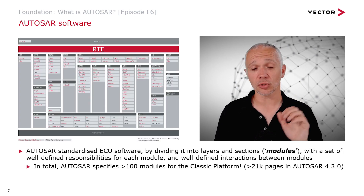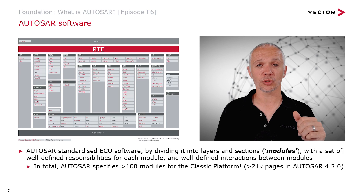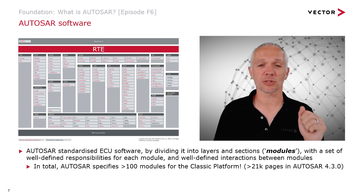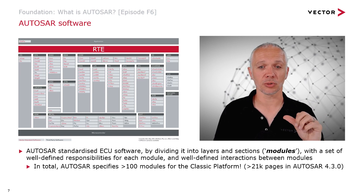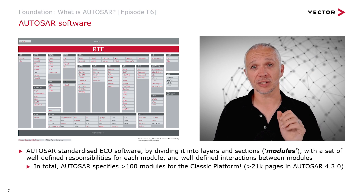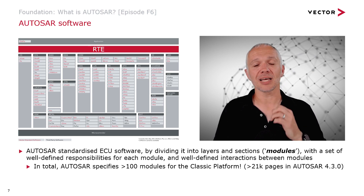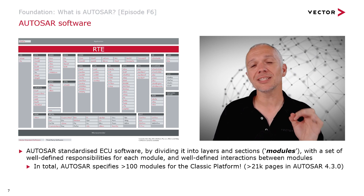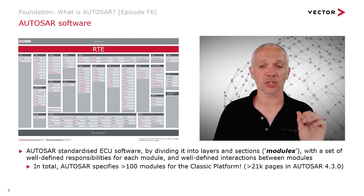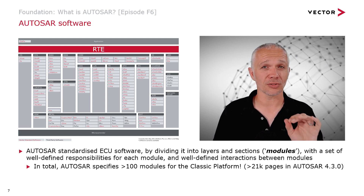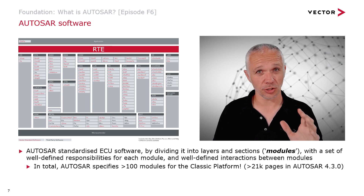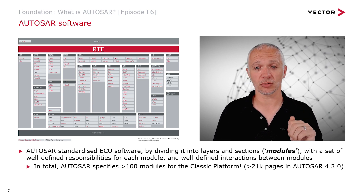In total, there are over a hundred different modules specified for the AUTOSAR Classic Platform. If you look into the specifications, there are over 21,000 pages of specification in the AUTOSAR 4.3 specification release — huge amounts of documentation.